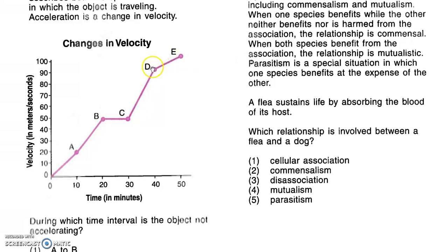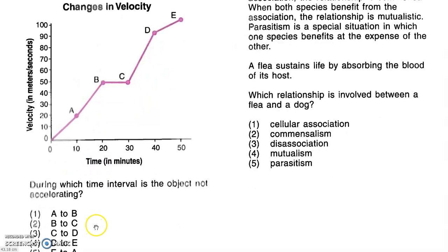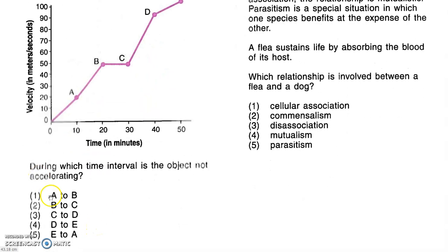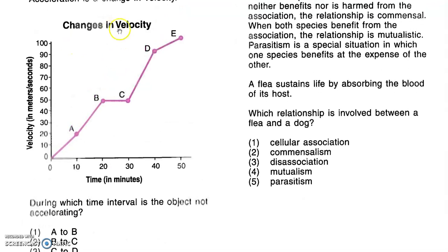From minute 30 to 40 we again have acceleration to 100 meters per second. And then from d to e we again have acceleration from 90 to 100 meters per second. During which time interval is the object not accelerating? Well, a to b, no. b to c, yes. We have no change in velocity, so we have no acceleration. The object travels at a constant speed and doesn't change its speed or velocity.